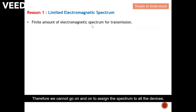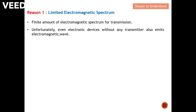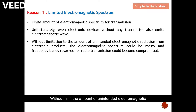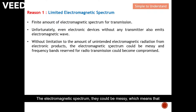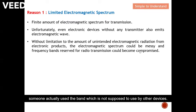Unfortunately, even electronic devices without any transmitter also emit electromagnetic waves. Without limits on the amount of unintended electromagnetic radiation from electronic products, the electromagnetic spectrum could become very messy — meaning devices could just transmit freely, which would jeopardize others using the spectrum. For example, radio transmissions can be compromised because some device uses a band it is not supposed to use.